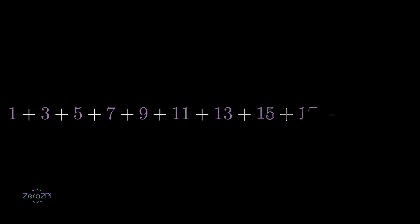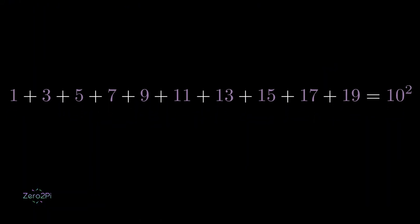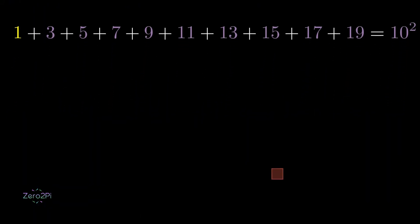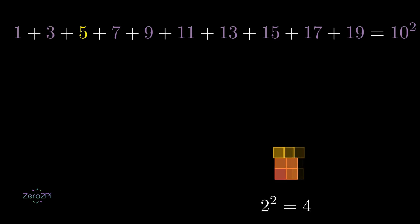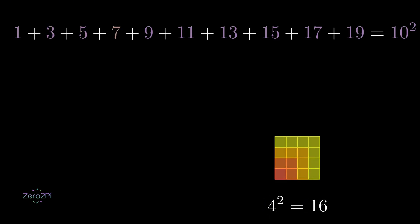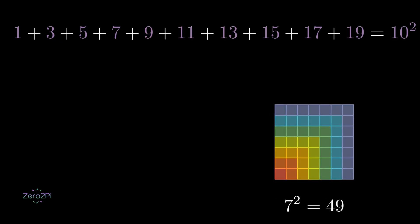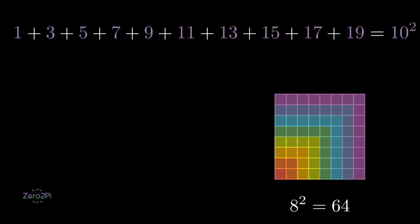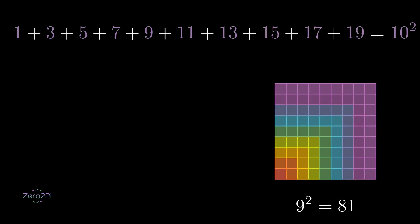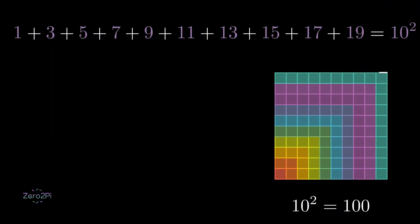Now I will show a pattern or an identity of sorts: the sum of odd numbers is always a square. If we have the first three odd numbers, their value is equal to the third square. The value of the first five odd numbers is equal to the fifth square. And this pattern continues to infinity. Here we only have the first ten odd numbers, which are equal to ten squared.